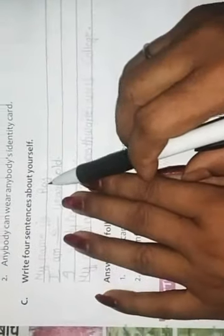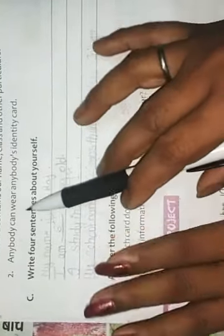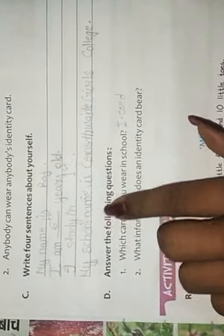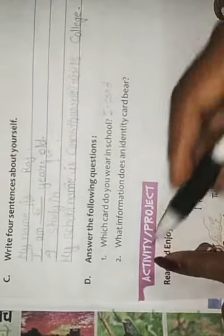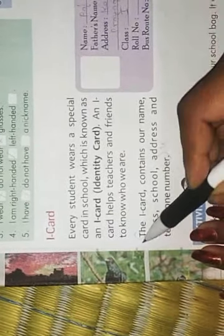Write four sentences about yourself. For example: My name is [your name]. I am six or seven years old. I study in class first. My school name is CrossFit Girls College. Answer the following questions: Which card do you wear in school? I-Card. What information does an identity card contain? The I-Card contains our name, class, school, address, and telephone number.